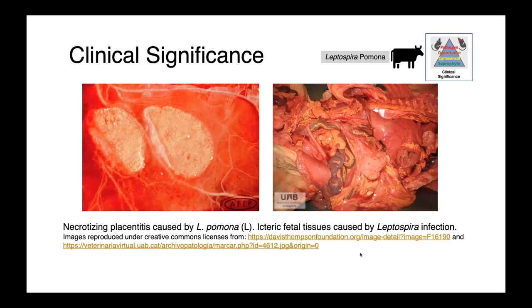In these images from a cow that aborted, on the left we have the placenta showing necrotizing placentitis, and on the right fetal tissues. What is apparent here is icterus — most visible in the mesenteric fat, which instead of being bright white is very yellow. This yellowing of otherwise white tissues is a characteristic hallmark sign of icterus, resulting from high levels of bilirubin, which can be a consequence of multiple disease processes including intravascular hemolysis.